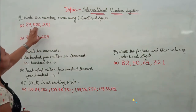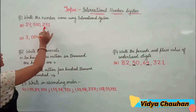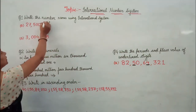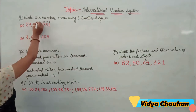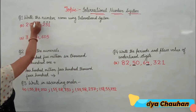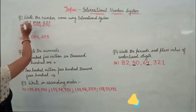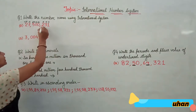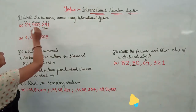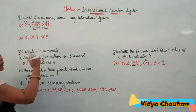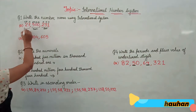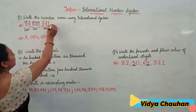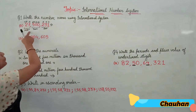There are groups of three digits together. The first group is the ones group. Writing its place values: ones, tens, hundreds, then thousands, ten thousands, hundred thousands, then millions and ten millions. The first group is ones, the second group is thousands (also known as periods), and the third group is millions. Now let us write the number name: 27 million...